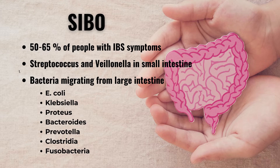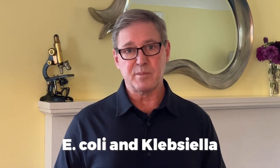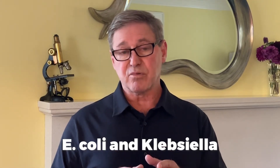The types of bacteria in SIBO include small intestinal inhabitants such as Streptococcus and Veillonella, as well as bacteria migrating from the large intestine. Some of those include E. coli, Klebsiella, Proteus, Bacteroides, Prevotella, Clostridia, and Fusobacteria, although recent work by the Pimentel group is highlighting a prominent role for the proteobacterial strains E. coli and Klebsiella, at least in hydrogen-predominant SIBO.